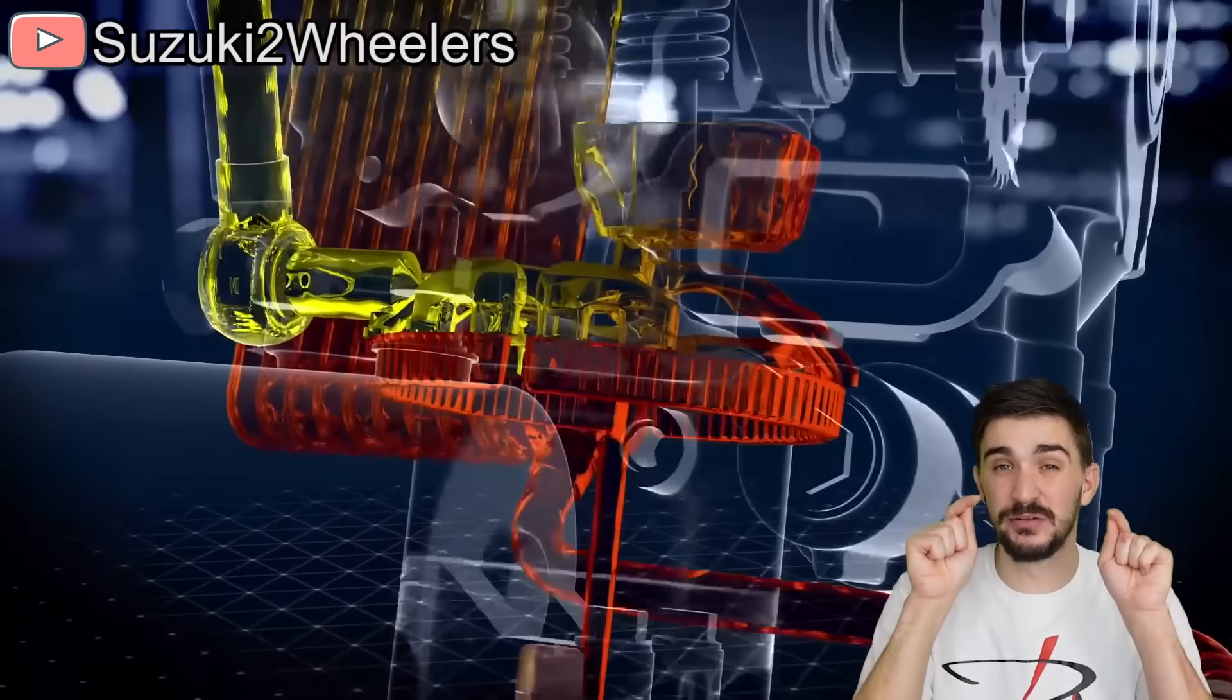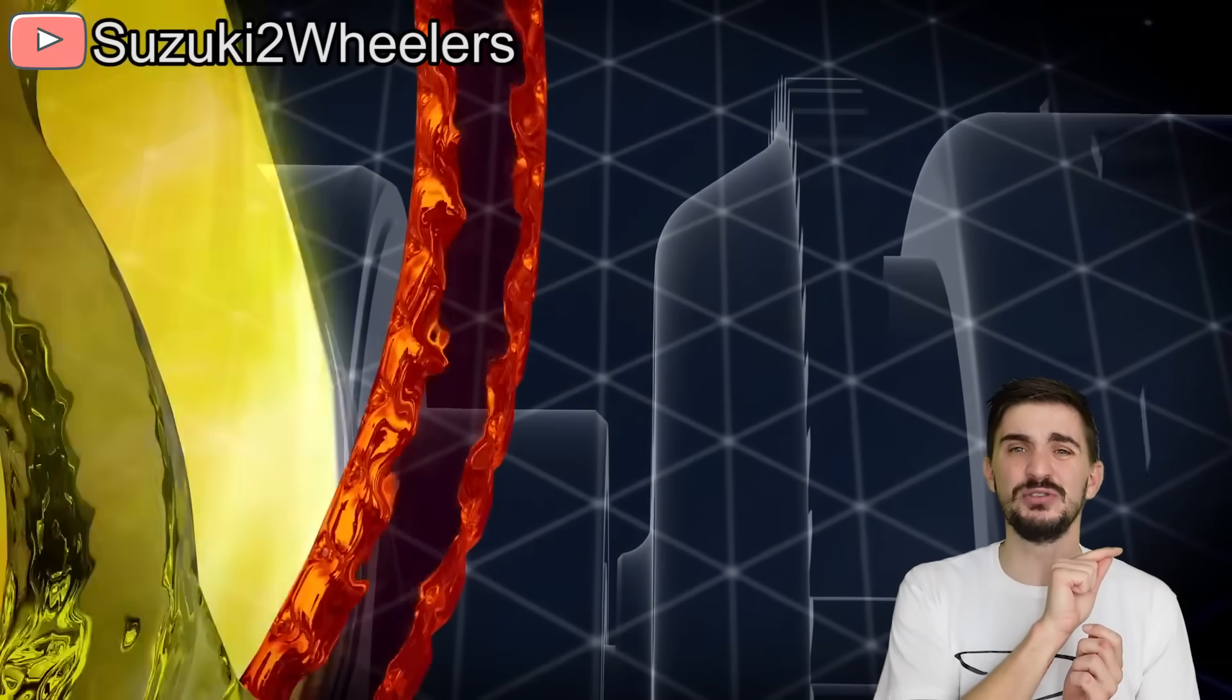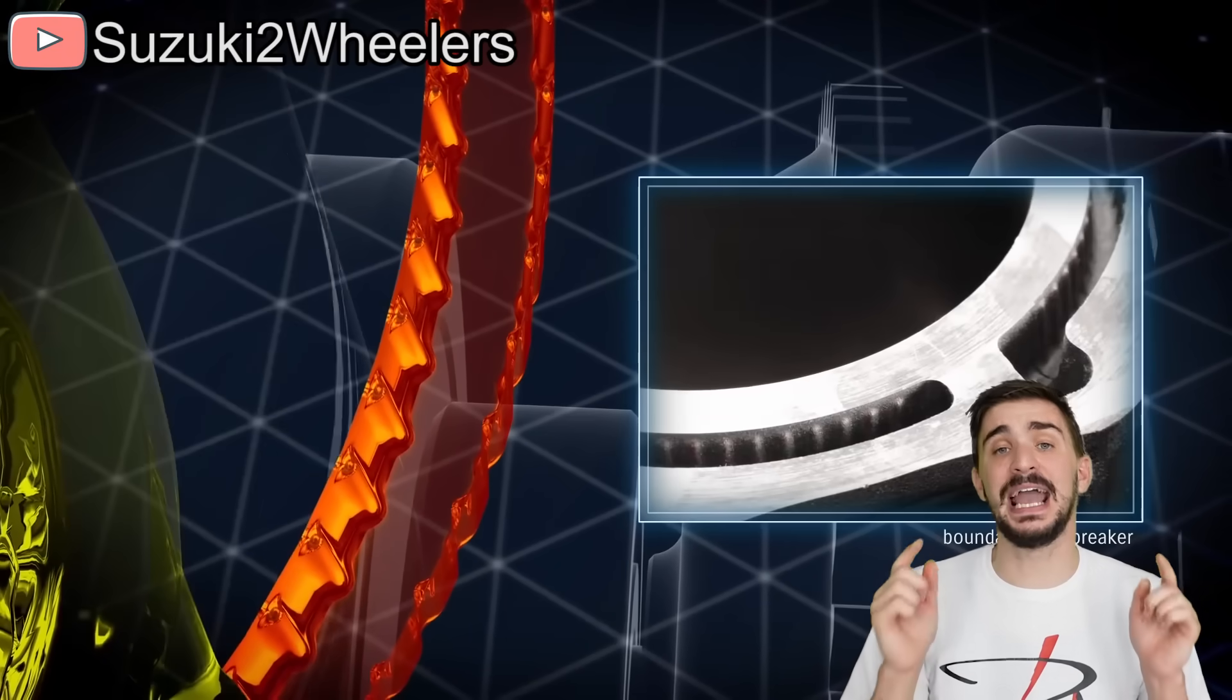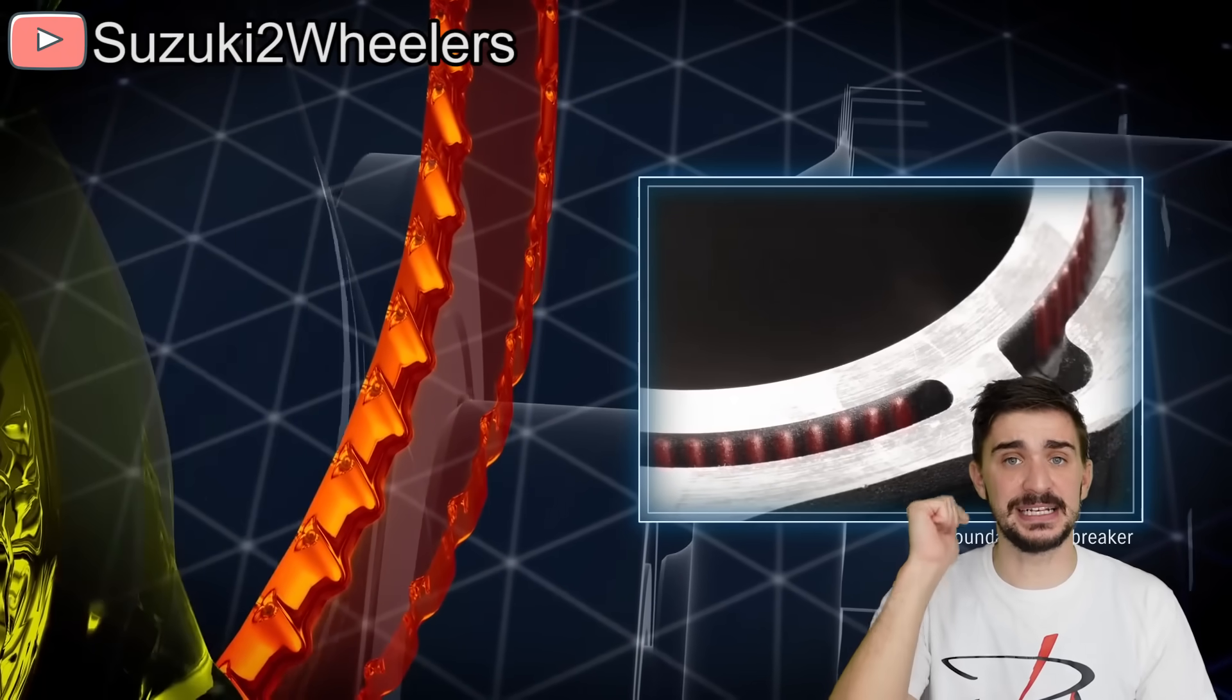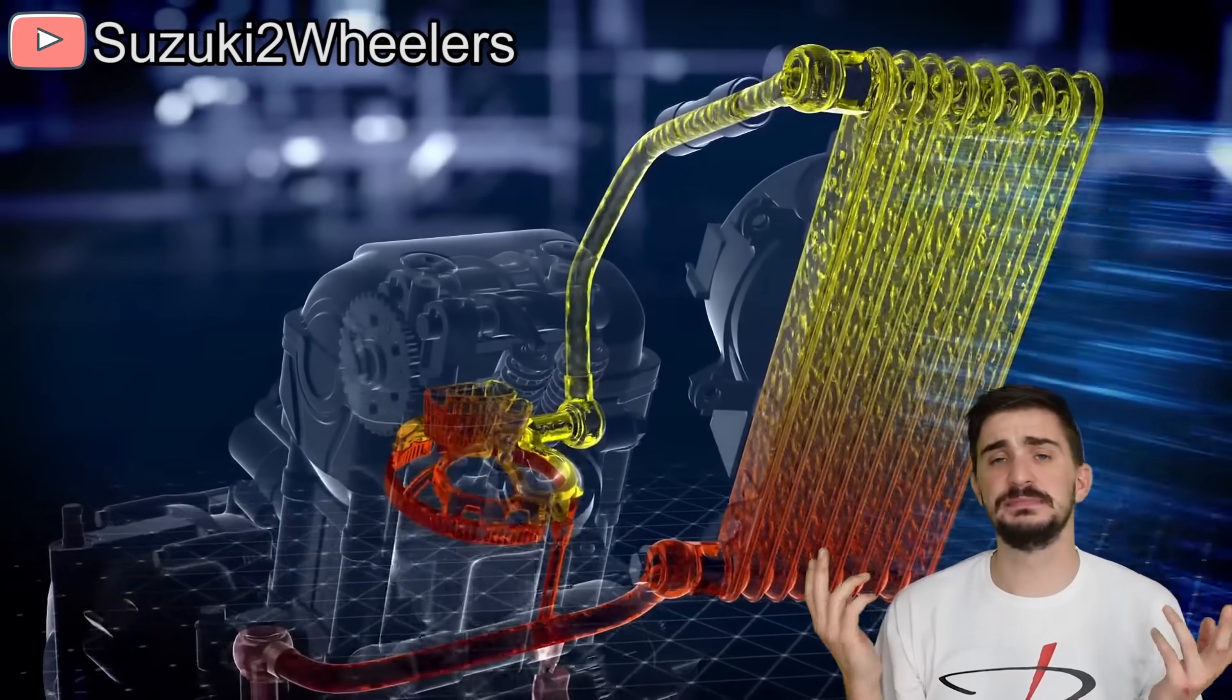Now the cooling channels also feature small ridges which act as boundary layer breakers. They prevent a zero-velocity boundary layer from forming directly on the surface of the cooling channel and reducing the efficiency of the heat exchange.